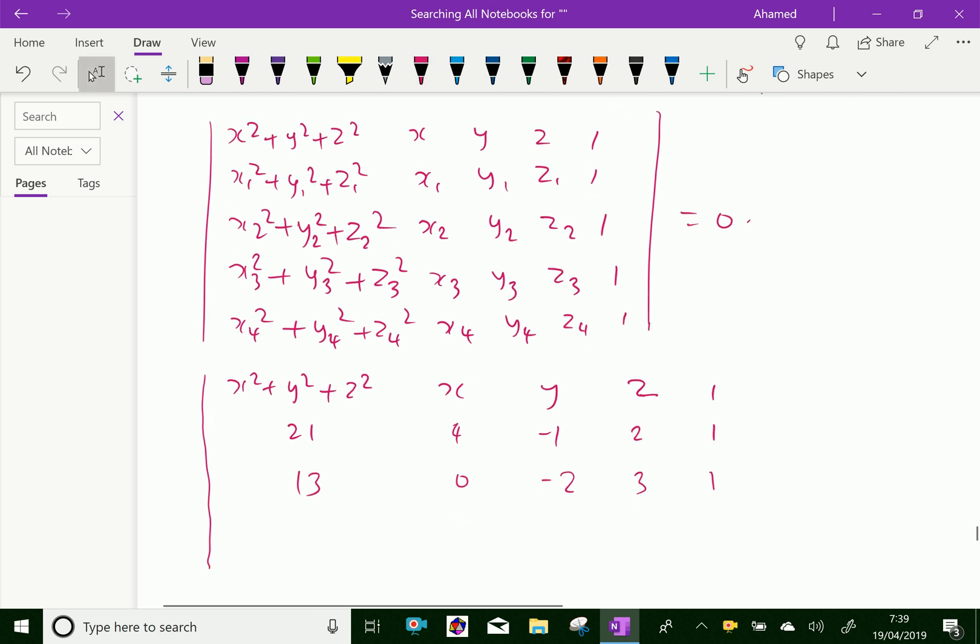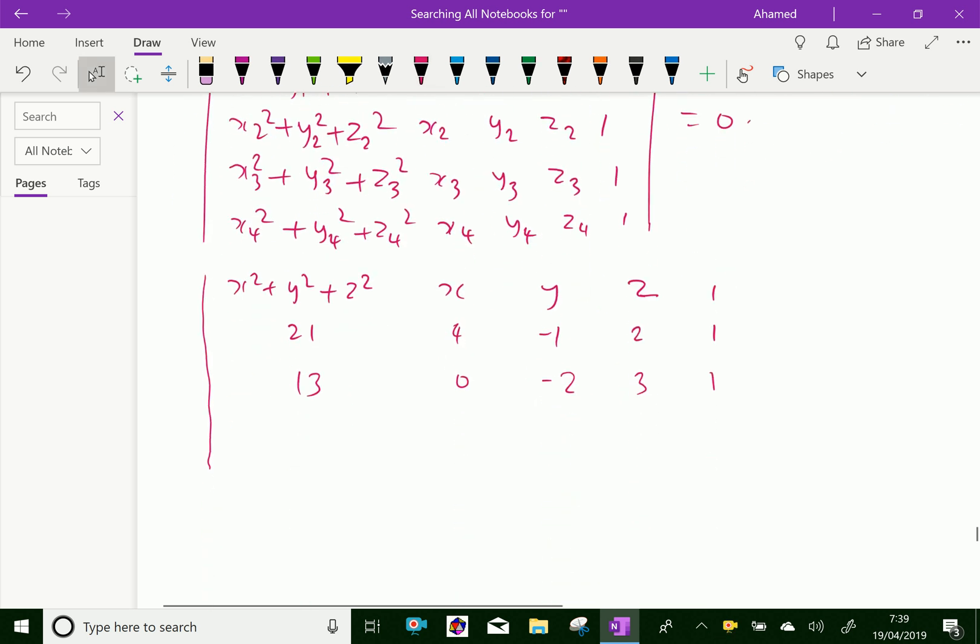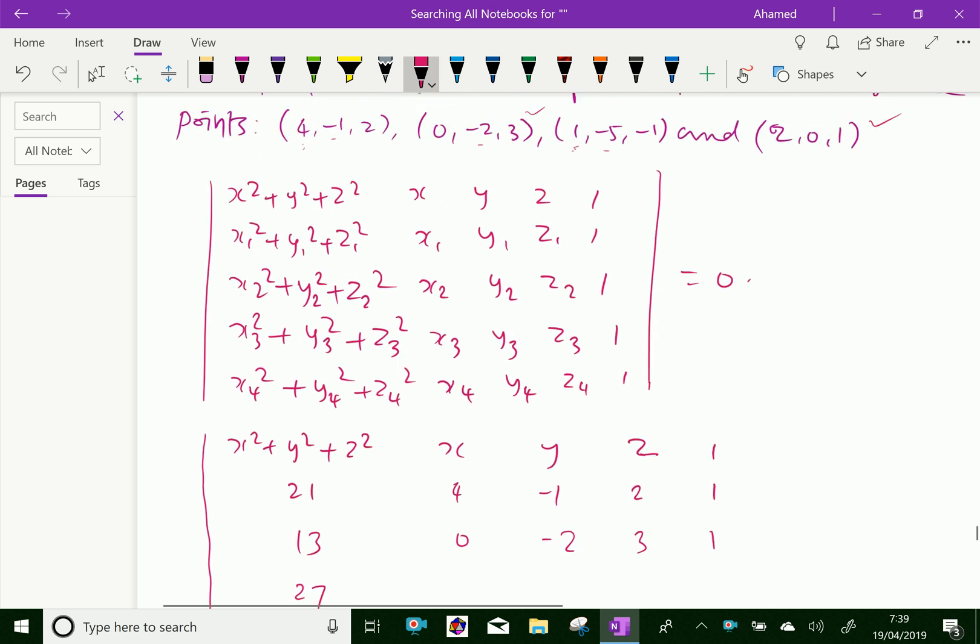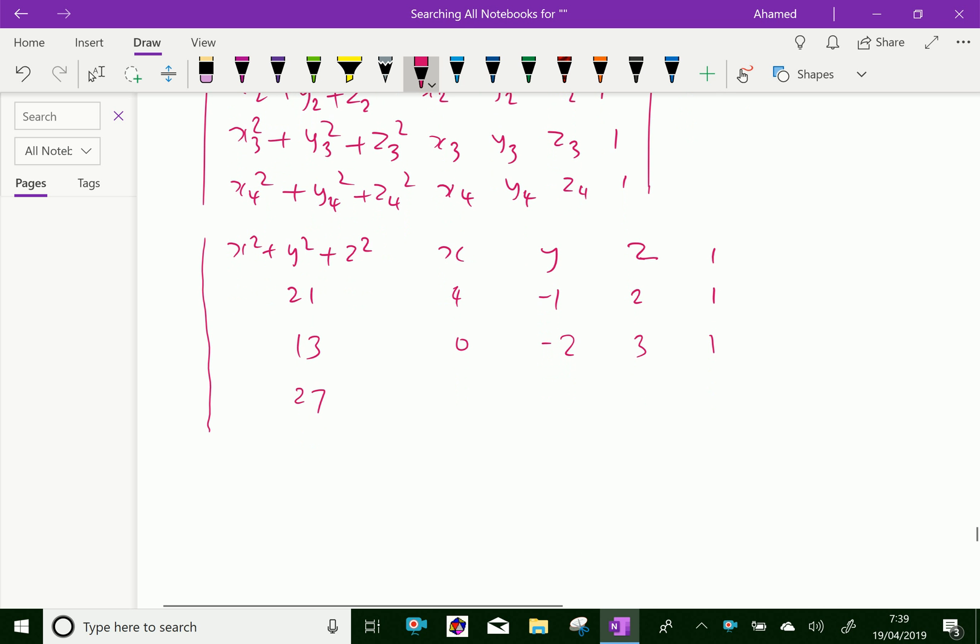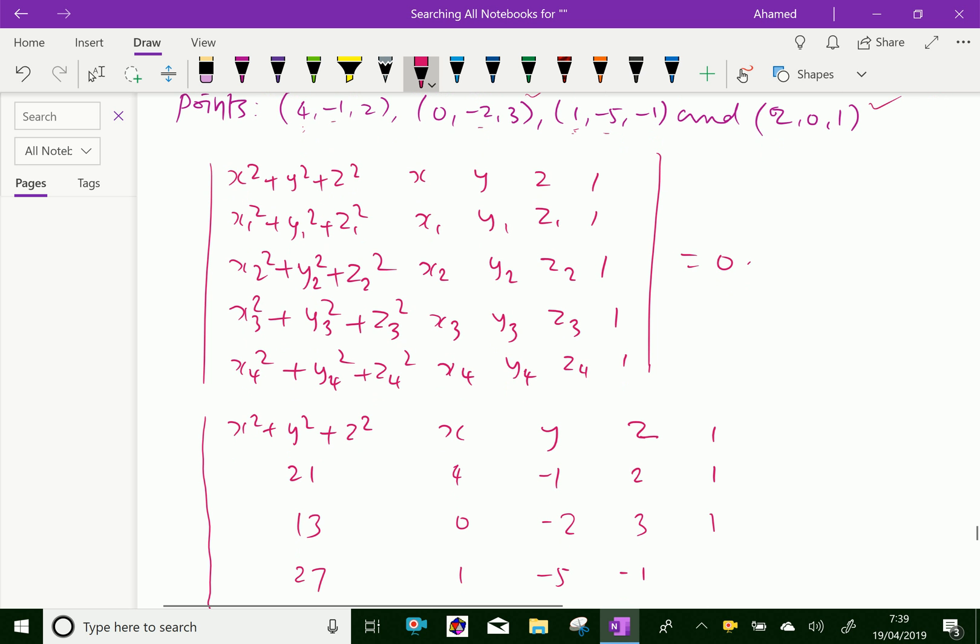Then, here x₃, here 1² is 1, 5² is 25, 25, 25, and 1² is 1, 25 + 2 is 27. Then the third point is 1, -5, -1, 1, -5, -1, and 1.